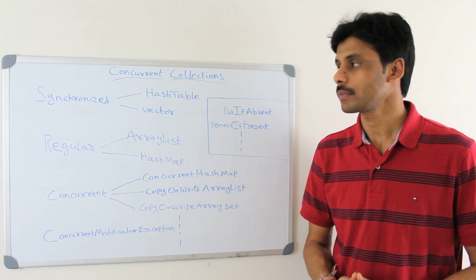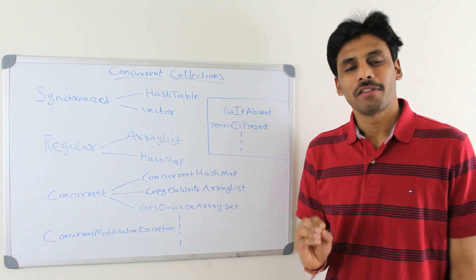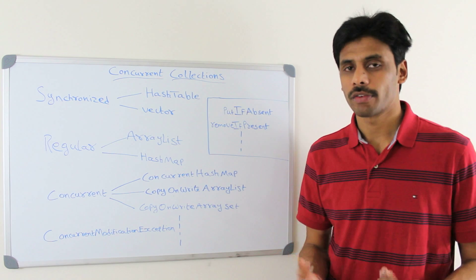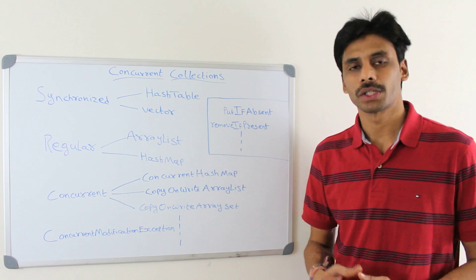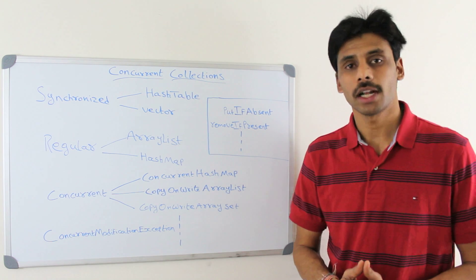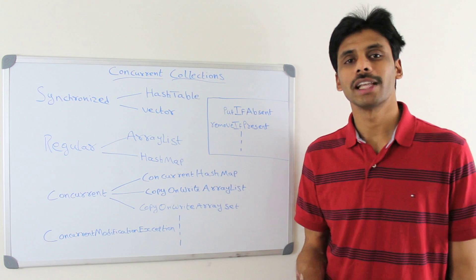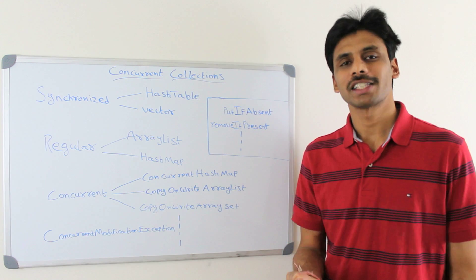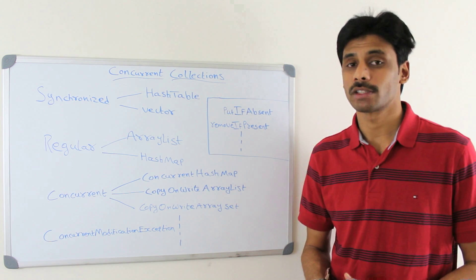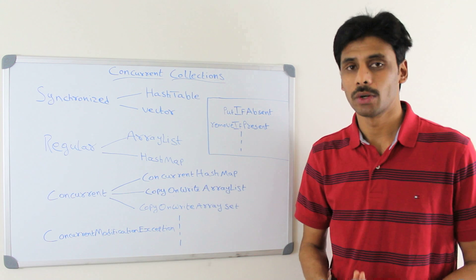To quickly summarize: use concurrent collections wherever possible in multi-threaded applications, especially when the application does a lot of read operations, which most real-time applications do, rather than write operations. There are several other useful collections like Deque and blocking queues which will be presented later. I will also cover the difference between fail-fast and fail-safe iterators — fail-fast iterators throw a ConcurrentModificationException when multiple threads access a collection simultaneously, whereas fail-safe iterators, used by concurrent collections, do not.